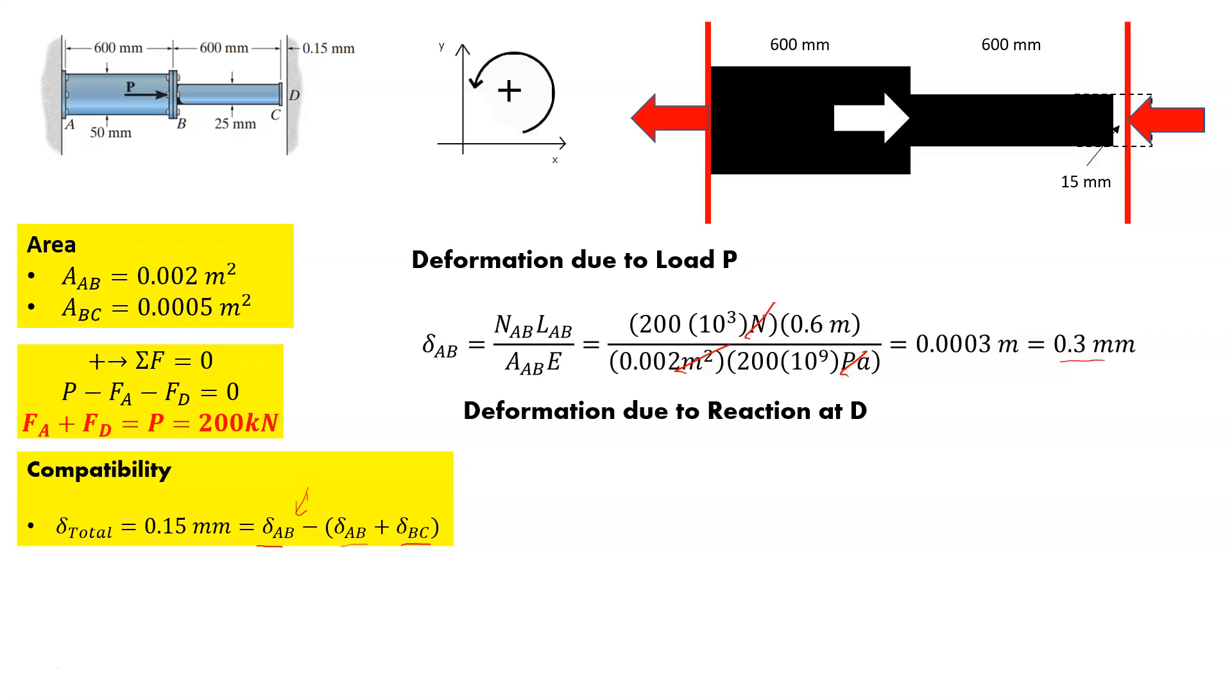So now we consider what deformation has taken place due to that reaction at D. We have to look at both segments AB and BC and we're looking at what that reaction due to D is. So this is the force that the reaction force at D. Now we're looking at the length of AB. We're looking at the area of AB and Young's modulus. Same going on at BC, the length of BC, the area of BC and Young's modulus. So keep in mind that that reaction force is going through the entire member. That's why we're able to use superposition to understand that.